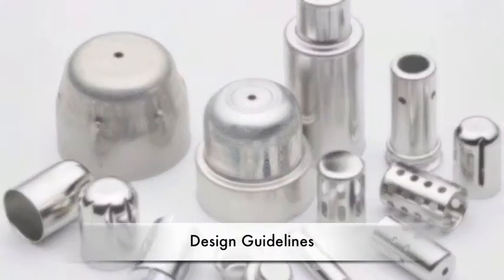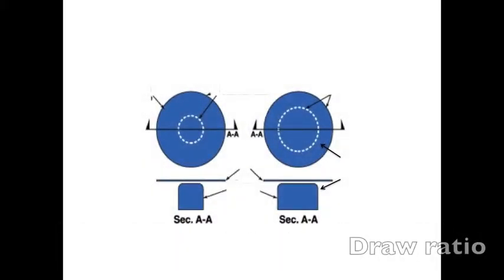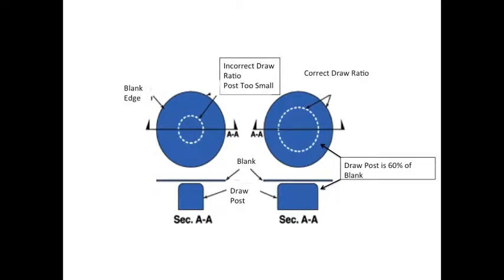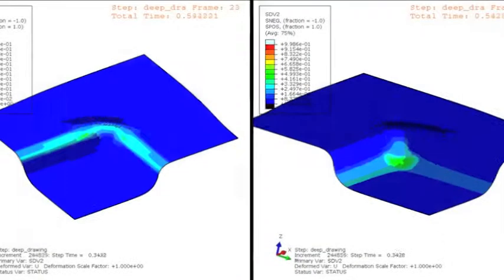The following are things to consider when deep drawing. One of the most important things to consider is the draw ratio, that is, the relationship between the draw post and the blank piece of material. As a general rule, the drawing punch should be about 60% of the blank size. An incorrect ratio can lead to the thinning of the material and eventual failure.